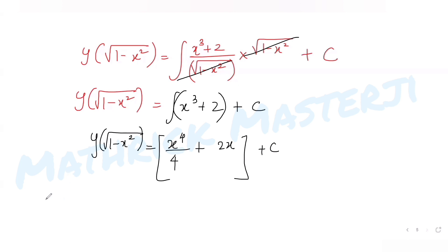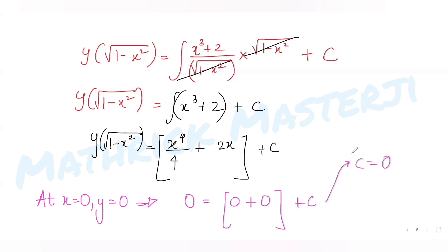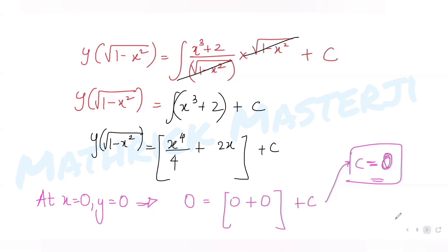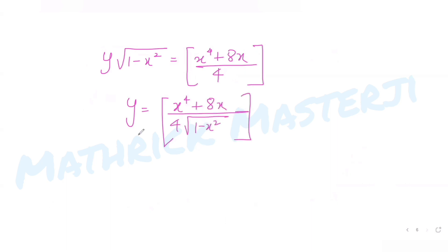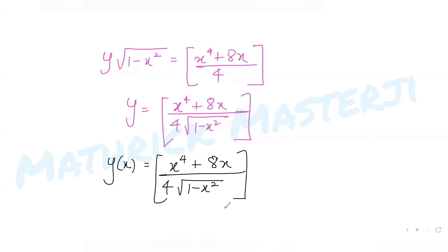Applying the initial condition y(0) = 0: the left side is 0, and the right side gives 0 + 0 + c = 0, so c = 0. Therefore the solution is y · √(1 - x²) = x⁴/4 + 2x, which gives y(x) = (x⁴ + 8x) / (4√(1 - x²)).